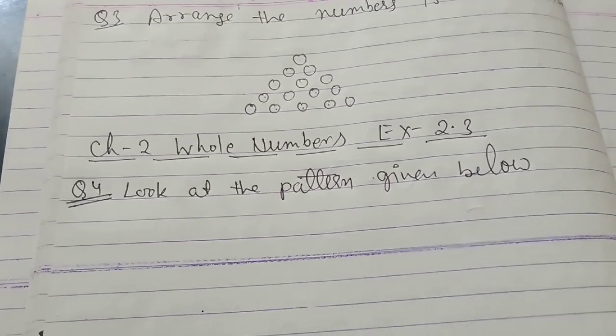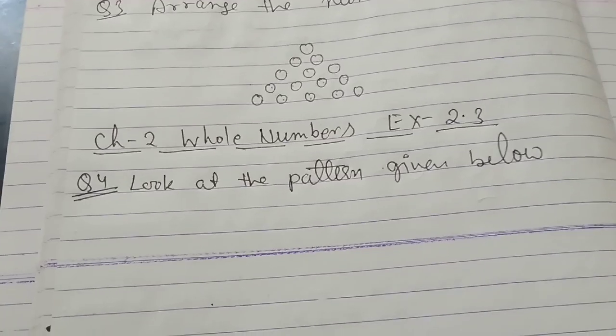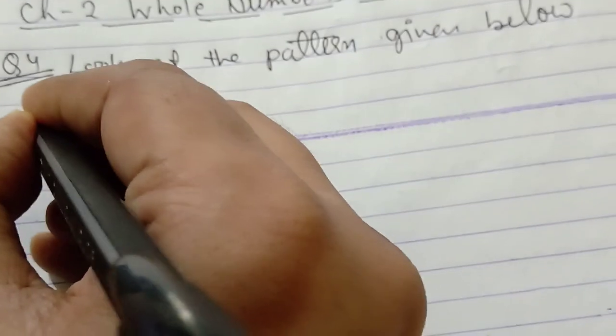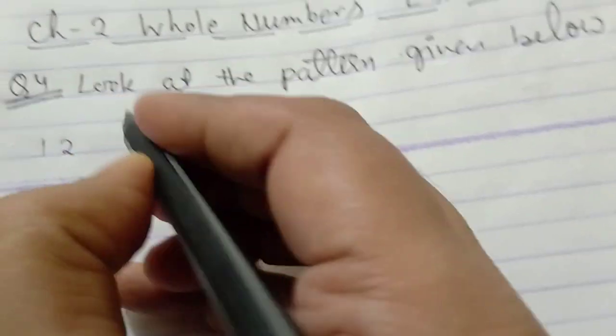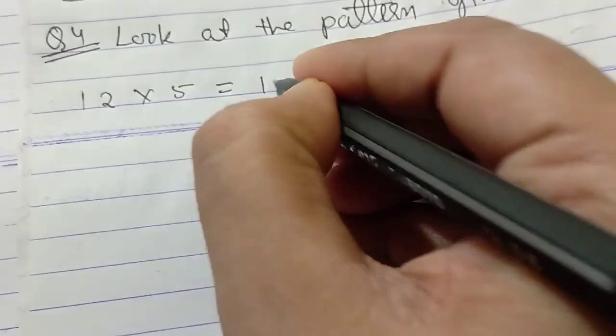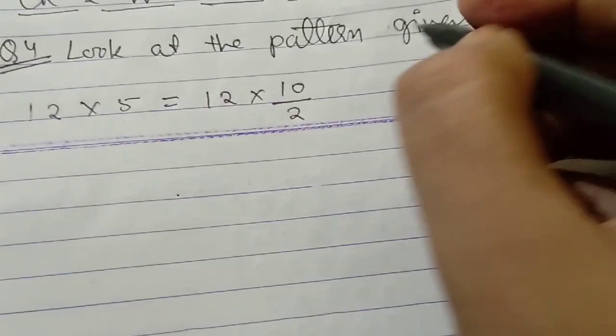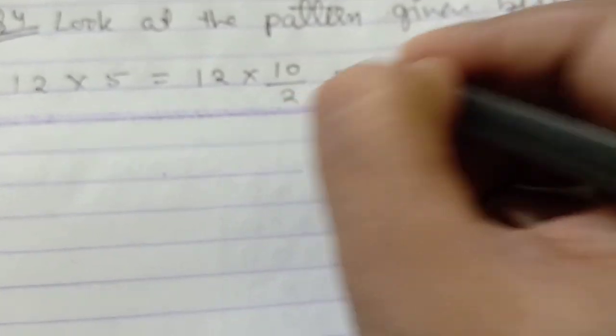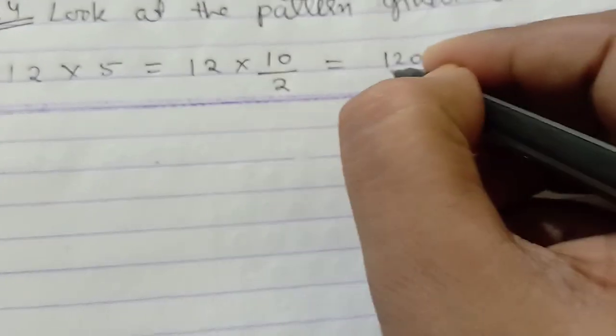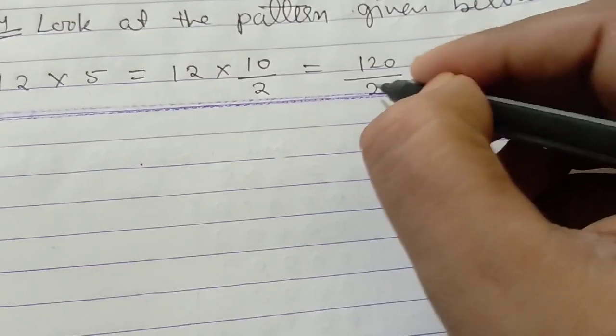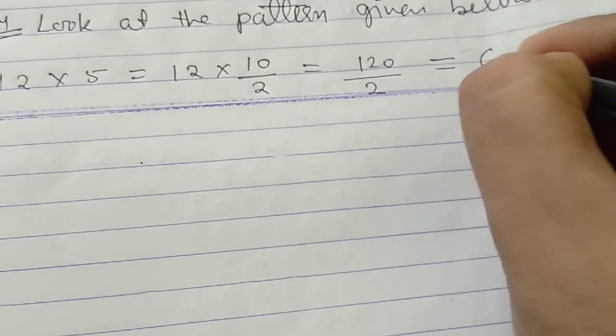I will write the first pattern. See what is the first pattern. 12 multiplied by 5 is equal to 12 multiplied by 10 by 2 equal to 120 divided by 2. Now, if we divide the number, you will get 60. So, this pattern will follow.